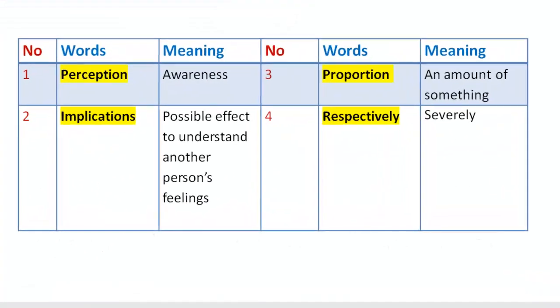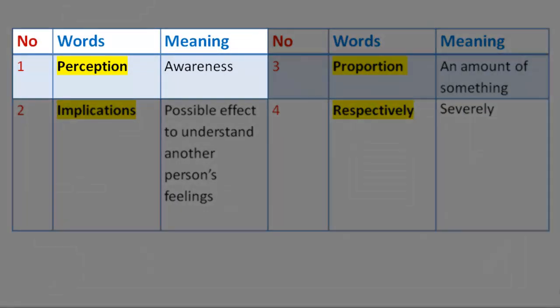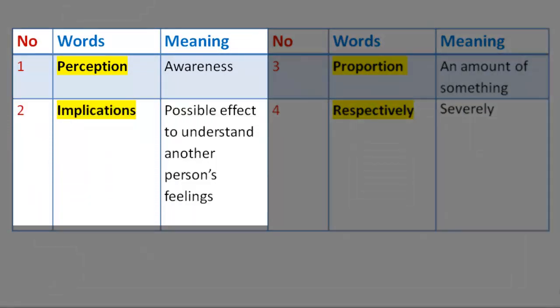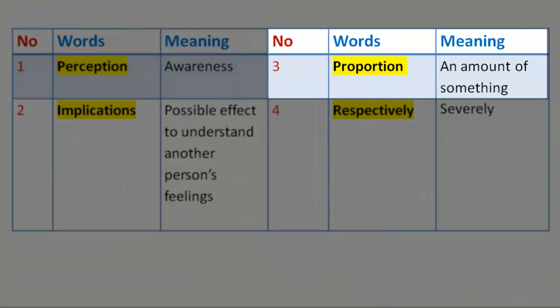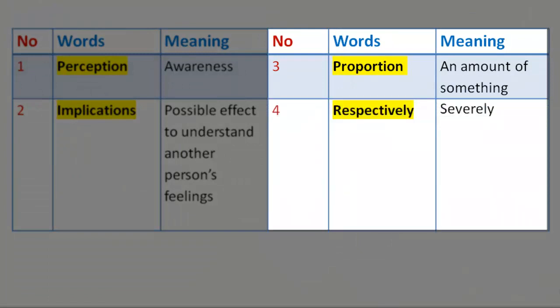Vocabulary 4. Number 1. Word: Perception. Meaning: Awareness. Number 2. Word: Implications. Meaning: Possible effect, to understand another person's feelings. Number 3. Word: Proportion. Meaning: An amount of something. Number 4. Word: Respectively. Meaning: Severally.